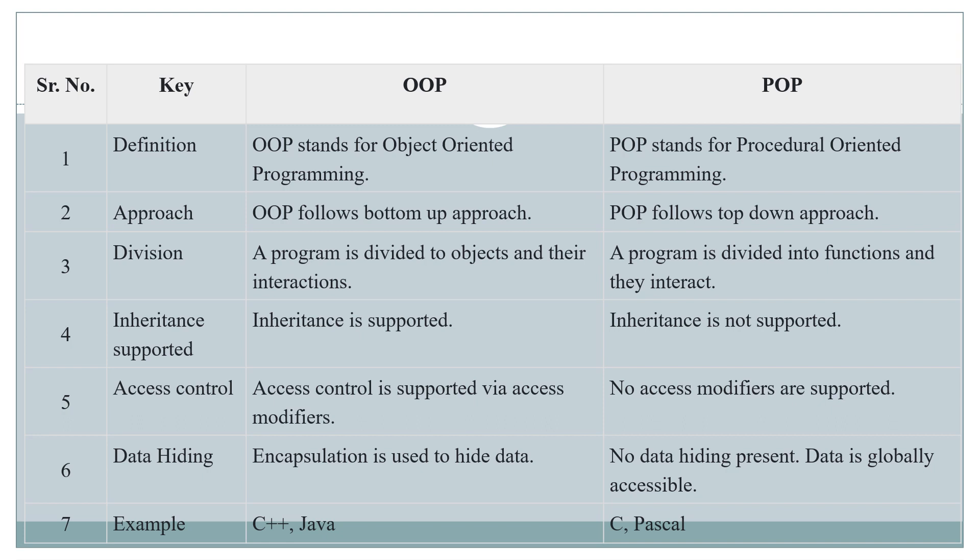The third key is division. In object oriented programming, a large program is divided into objects and their interactions. In procedural oriented programming, a large program is divided into functions which also interact with each other. Simply put, in OOP the units are called objects, and in POP the units are called functions.